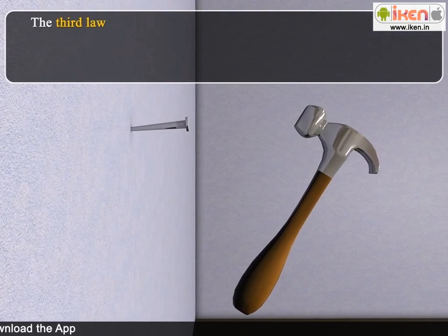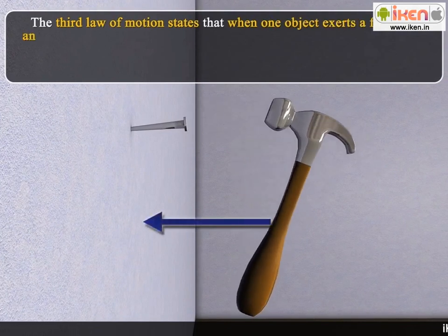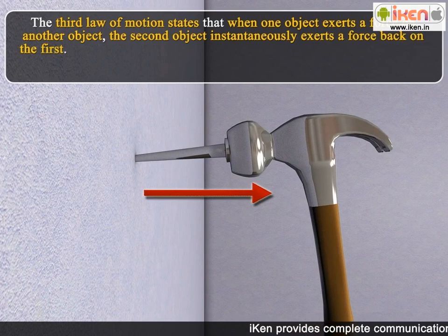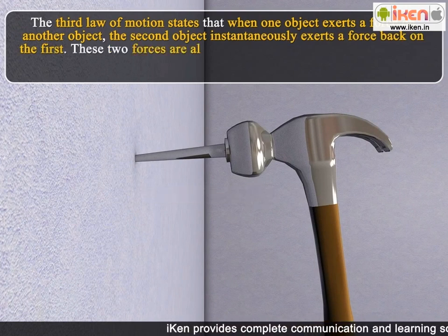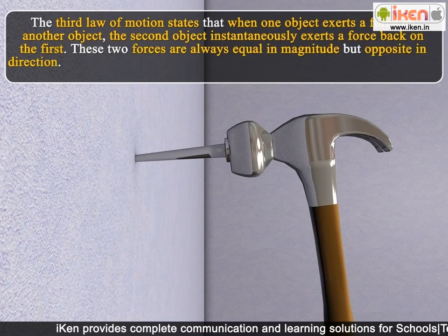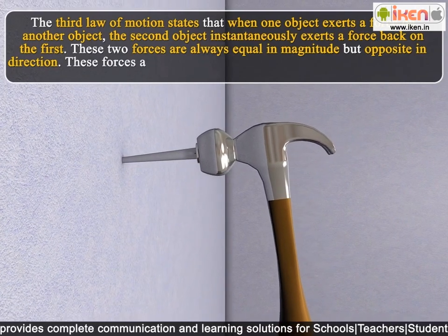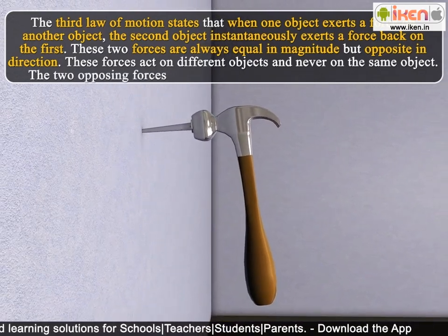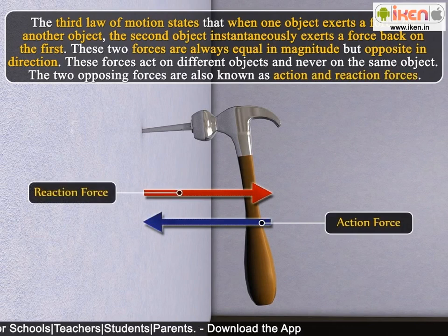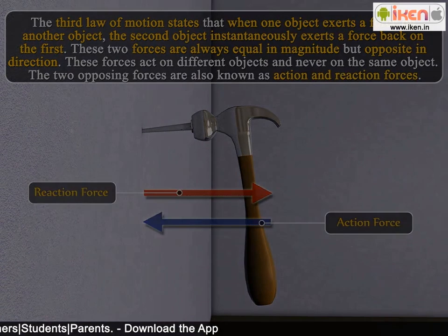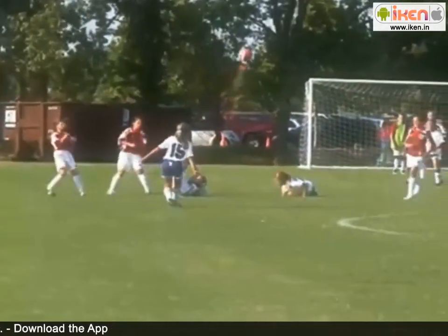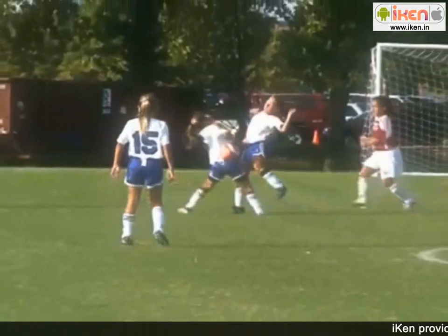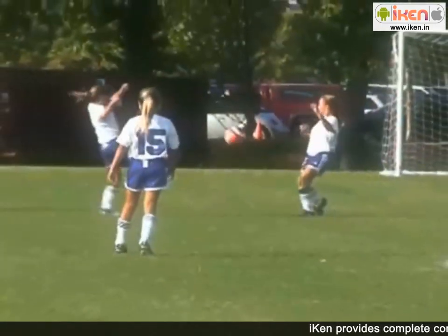The third law of motion states that when one object exerts a force on another object, the second object instantaneously exerts a force back on the first. These two forces are always equal in magnitude but opposite in direction. These forces act on different objects and never on the same object. The two opposing forces are also known as action and reaction forces. In the game of football, sometimes, while trying to kick the ball with greater force, one player tends to collide with the other player. Both feel hurt because each applies a force on the other.